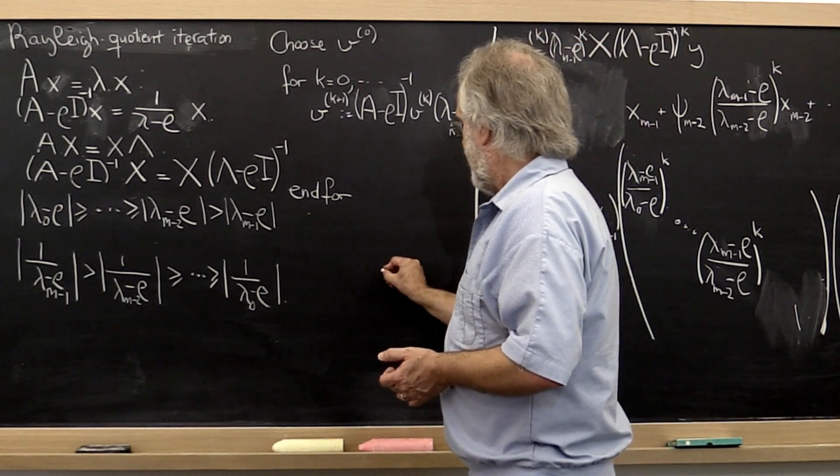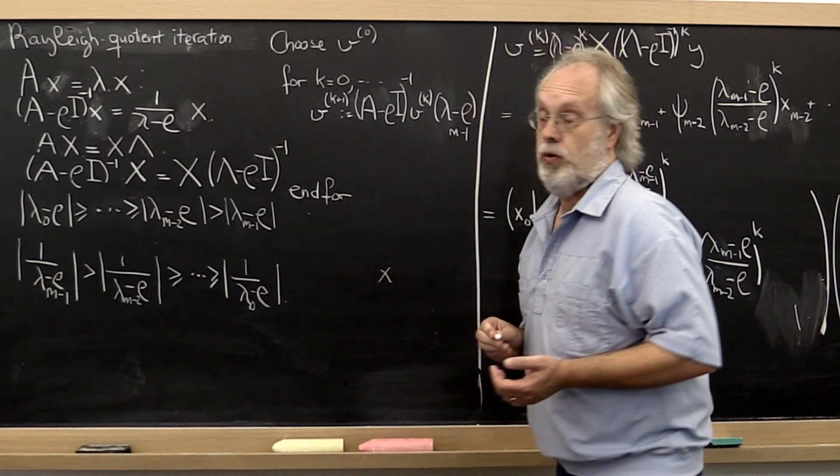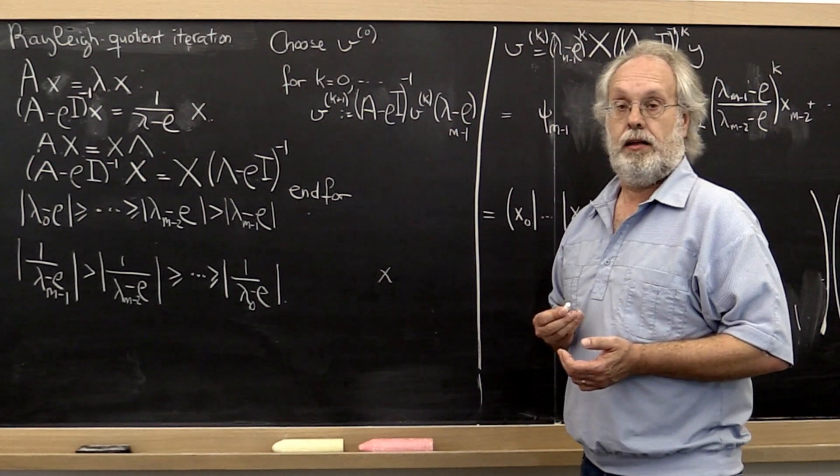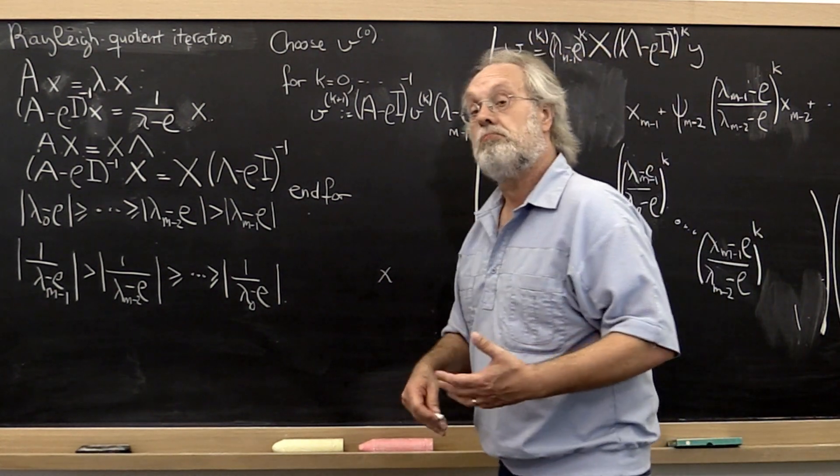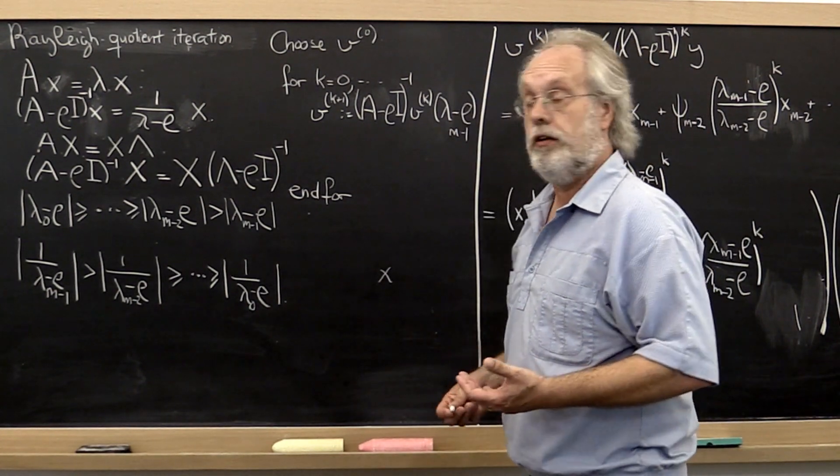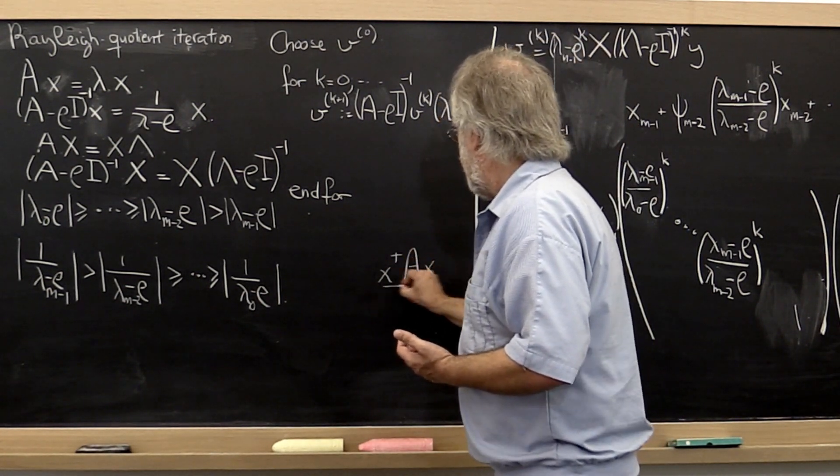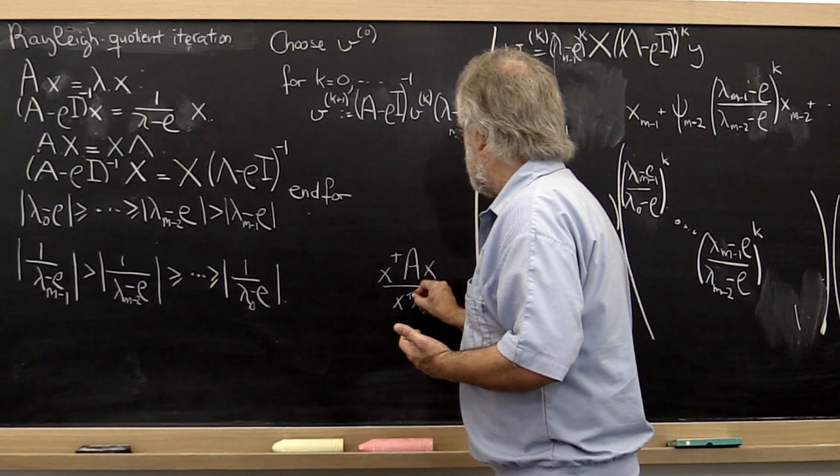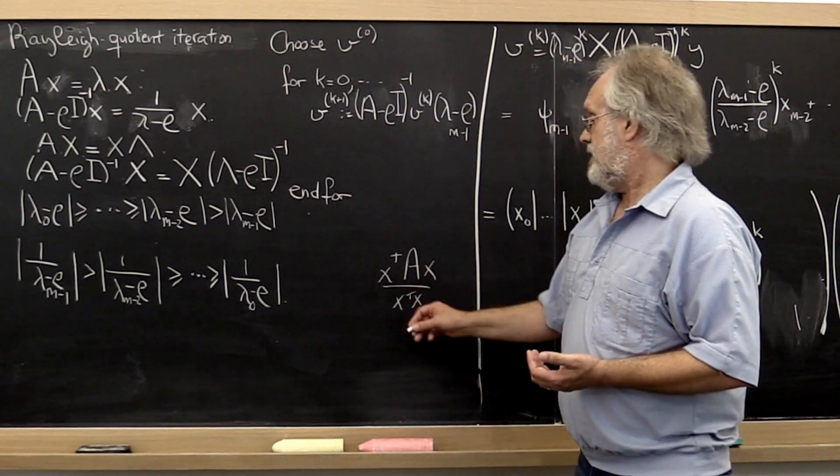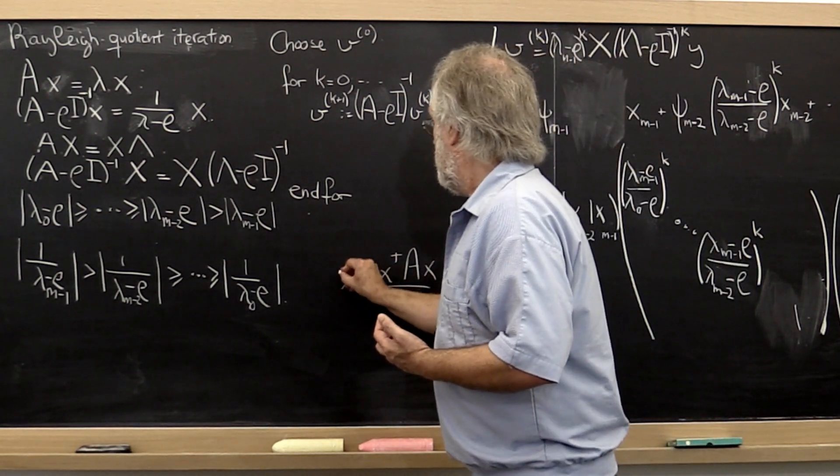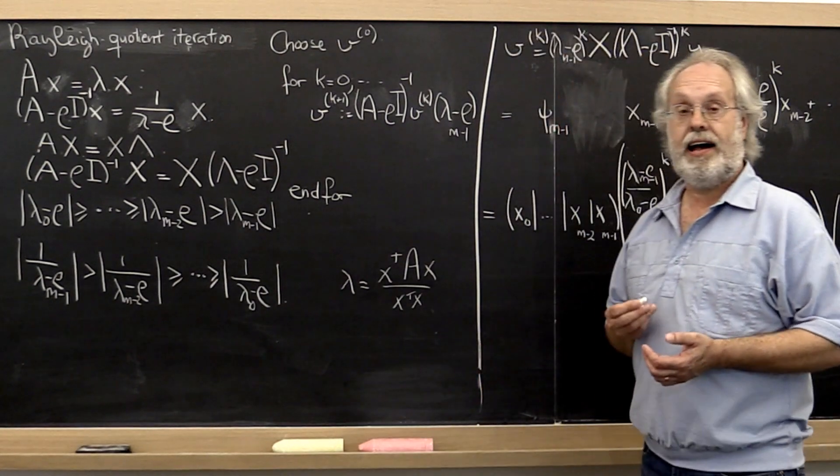Well, we saw that if x is an eigenvector of A, then if all the values we run into are real valued, x transpose A x divided by x transpose x is actually equal to the associated eigenvalue.